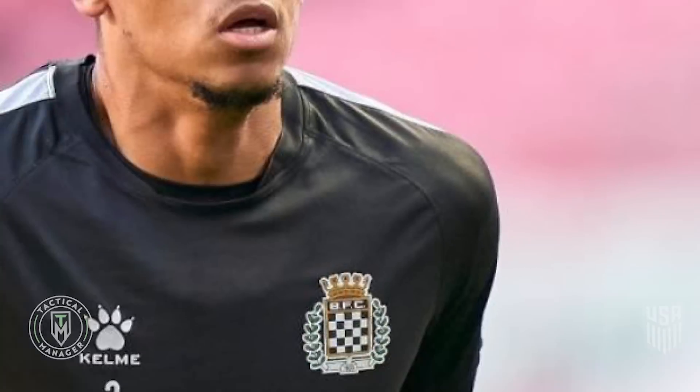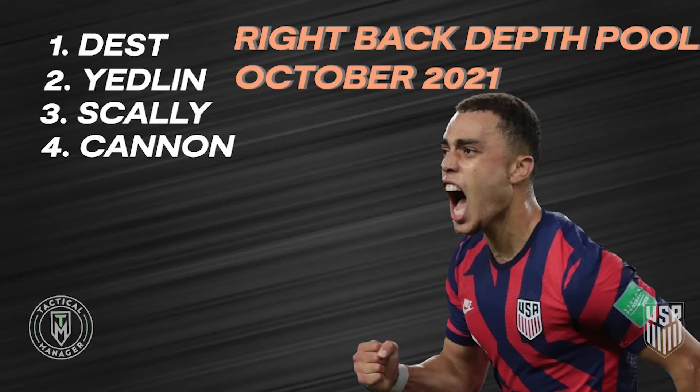Moving on to number three: Joe Scully is now my number three right back. I think he can take over Yedlin's position very quickly, but right now he's my number three. My number four is Reggie Cannon — he hasn't been playing much for Boa Vista but just started this past week, and I still put him ahead of Brian Reynolds and Shaq Moore. We also lost Julian Araujo, so that's not even an option anymore. So to recap, the new right back list is: Dest, Yedlin, Joe Scully, and Reggie Cannon. In two months we'll update this, and I think Joe Scully might surpass Yedlin.